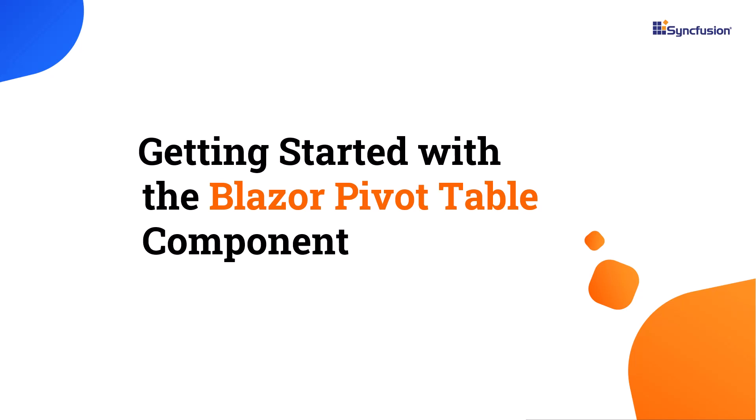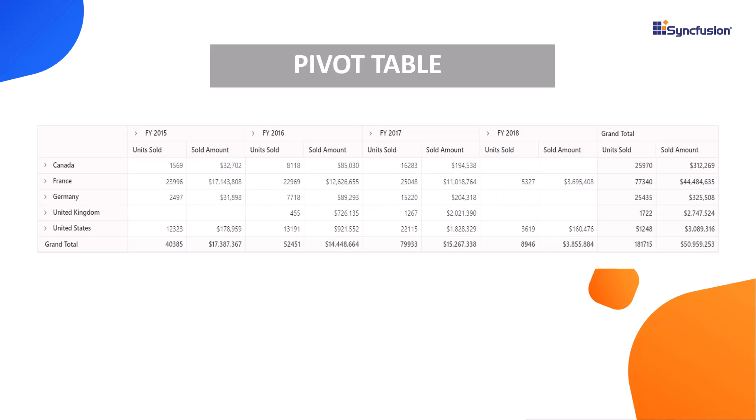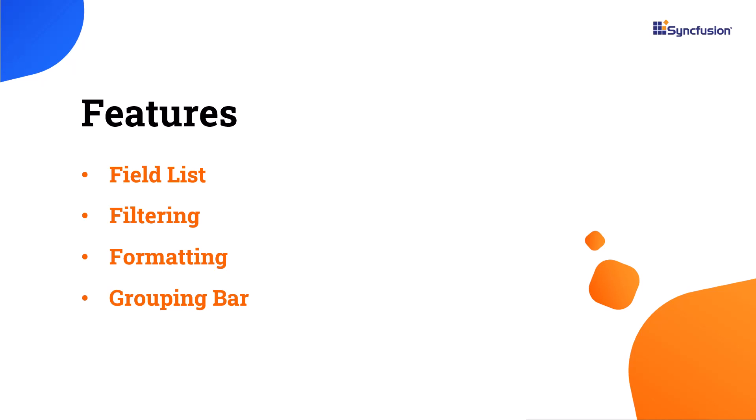Hi everyone, welcome to this tutorial on how to get started with the Blazor PivotTable component. The PivotTable is a powerful tool that allows you to organize, summarize, and visualize business datasets in cross-tabular format. In this video, I will show you how to add the Syncfusion Blazor PivotTable component to a Blazor WebAssembly app, and give you an overview of some of its features like field list, filtering, formatting, and grouping bar.